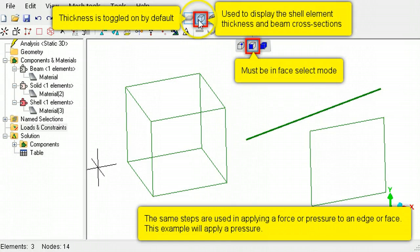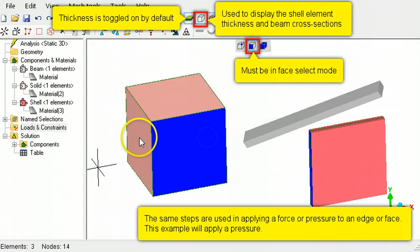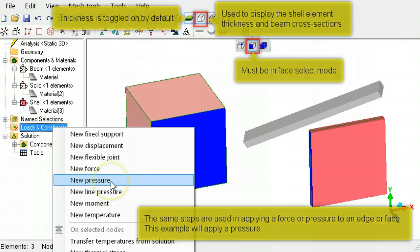To apply a force or pressure, select the edges or faces, right-click, loads and constraints, then apply the pressure.